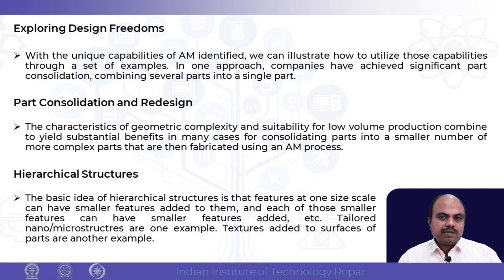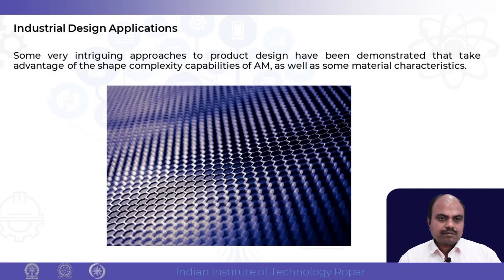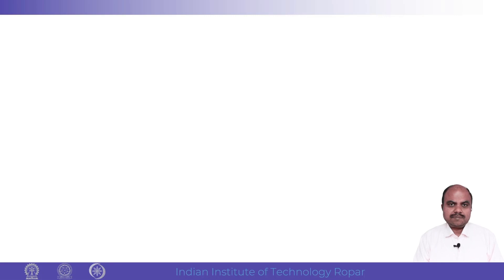Parts consolidation redesign is especially important when there is low volume production. If you want to manufacture more separate parts, it is going to be expensive, so parts consolidation is important. Hierarchical structures can also be created. In industrial design applications, things are very different — we need products which are looking beautiful, attractive, aesthetic, and ergonomic, suitable for the people who are going to use them. This is possible when we have additive manufacturing. We will look at two examples of how part consolidation is an important step in additive manufacturing.